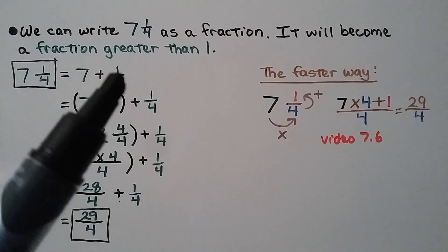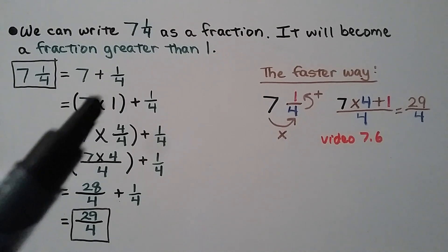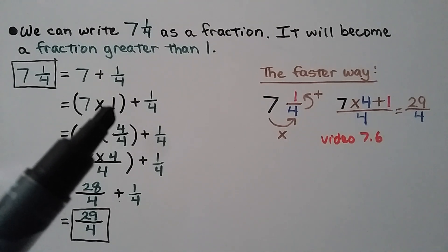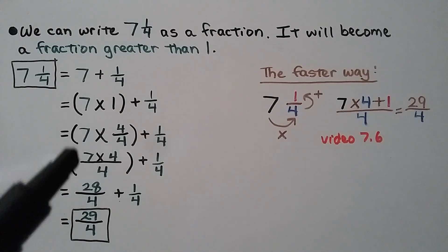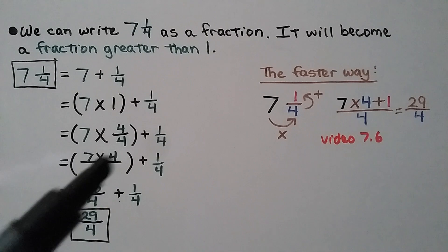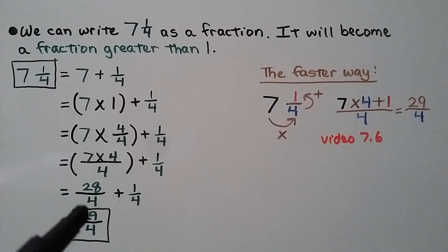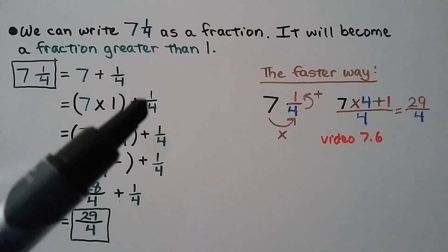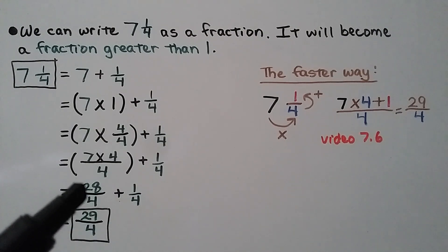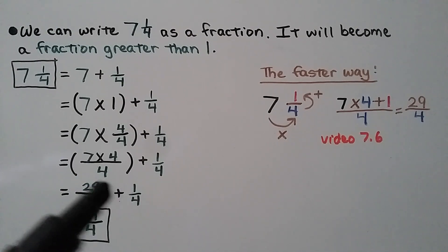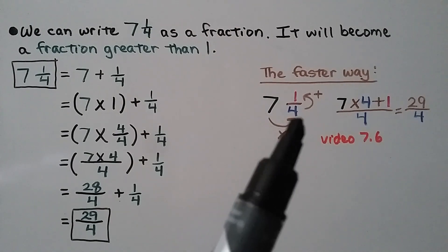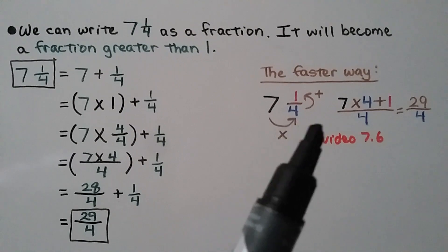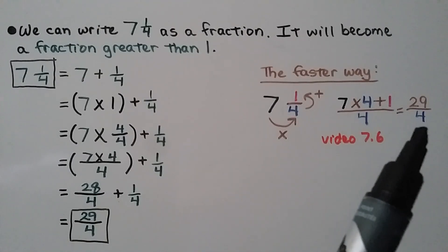7 and 1 fourth will become 29 fourths. Breaking it down using the identity property: we have 7 and 1 fourth, which we look at as 7 plus 1 fourth. And 7 is 7 times 1 — identity property, it stays 7. We can look at this 1 as 4 fourths, since same numerator and denominator equals 1. We multiply 7 times 4 fourths by multiplying the 7 to the numerator 4, giving us 28. We write it over that same denominator 4 — we have 28 fourths. Then we add that 1 fourth: 28 fourths plus 1 fourth, we add the numerators, we get 29 fourths.